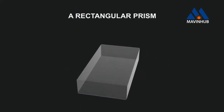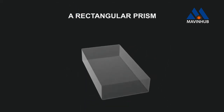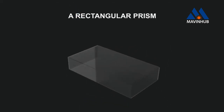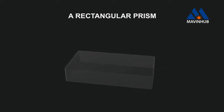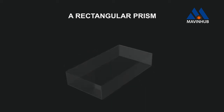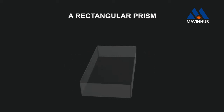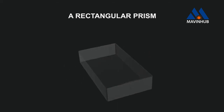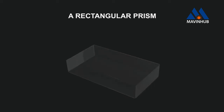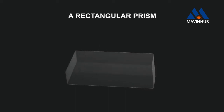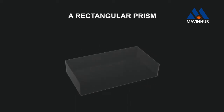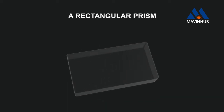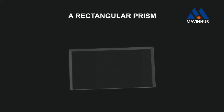A rectangular prism, also called a glass slab, is a three-dimensional shape with six faces. All the faces of the prism are rectangles. Let's view the rectangular prism from the top.